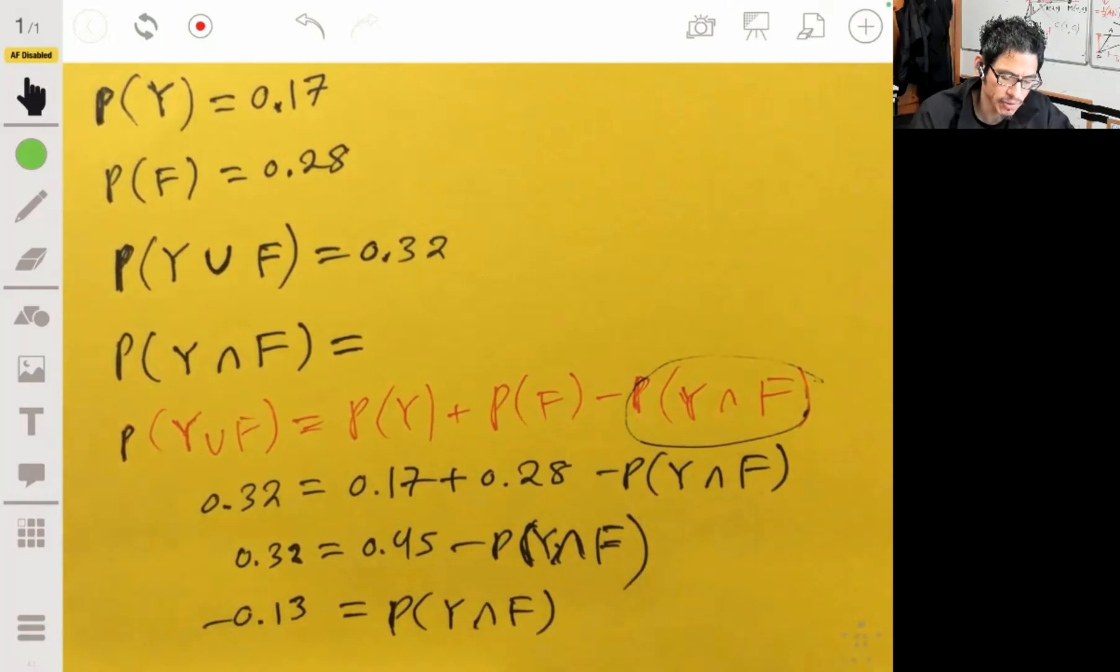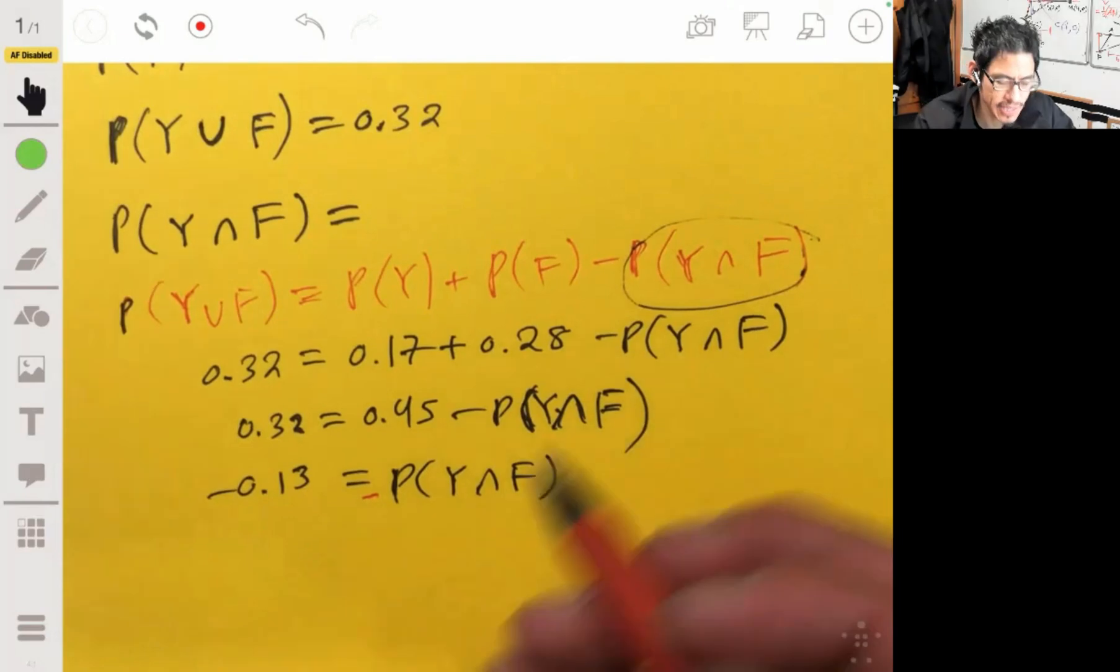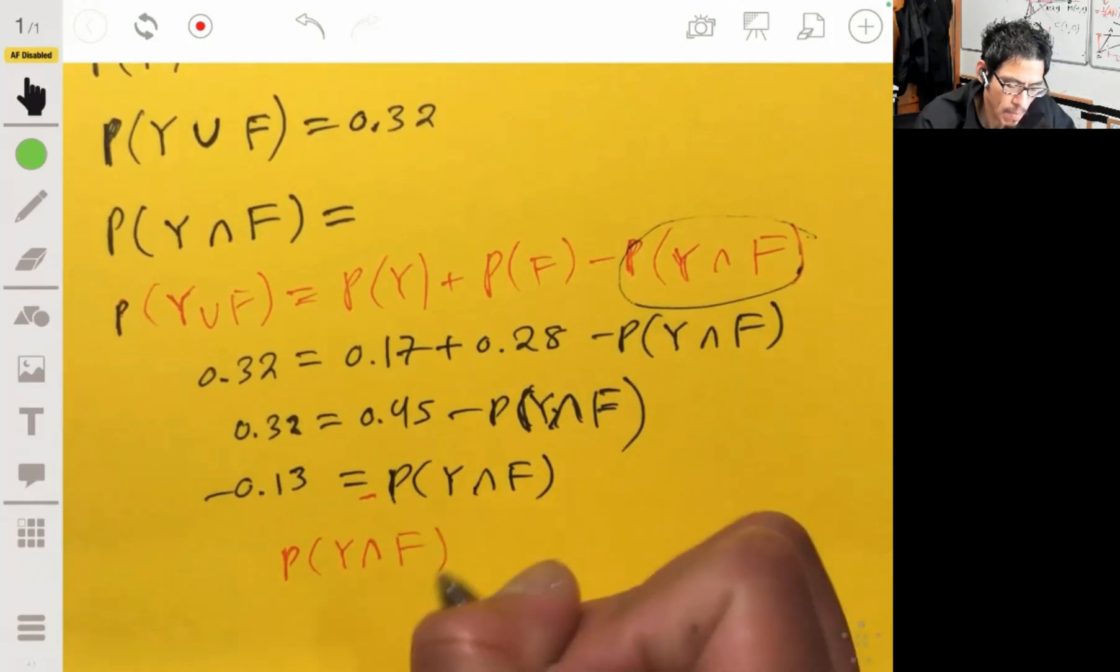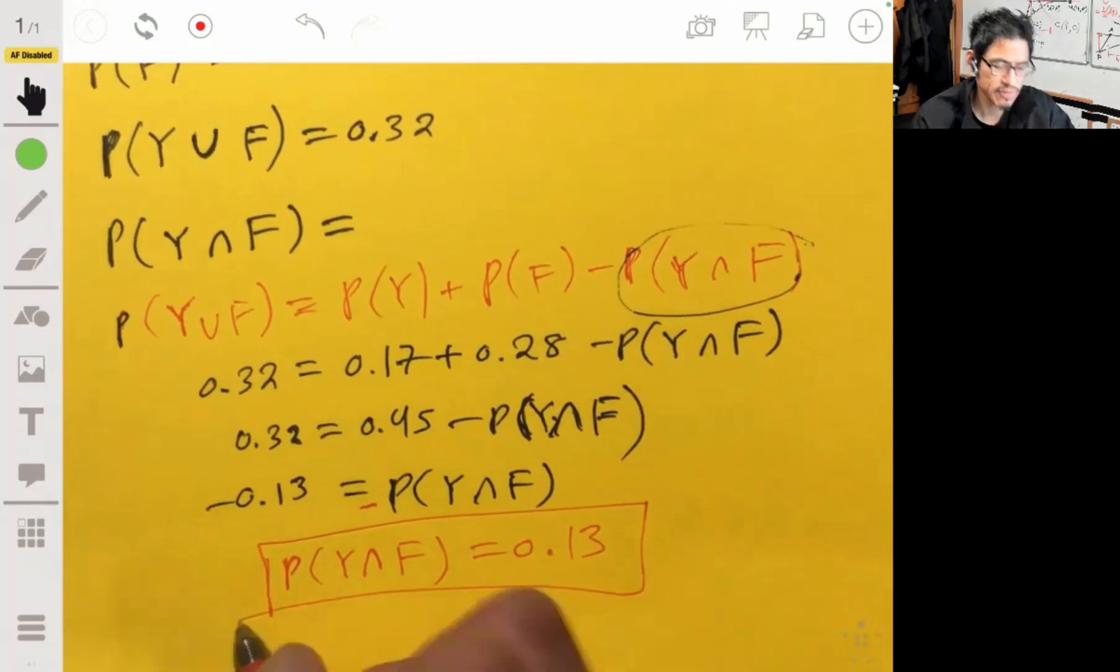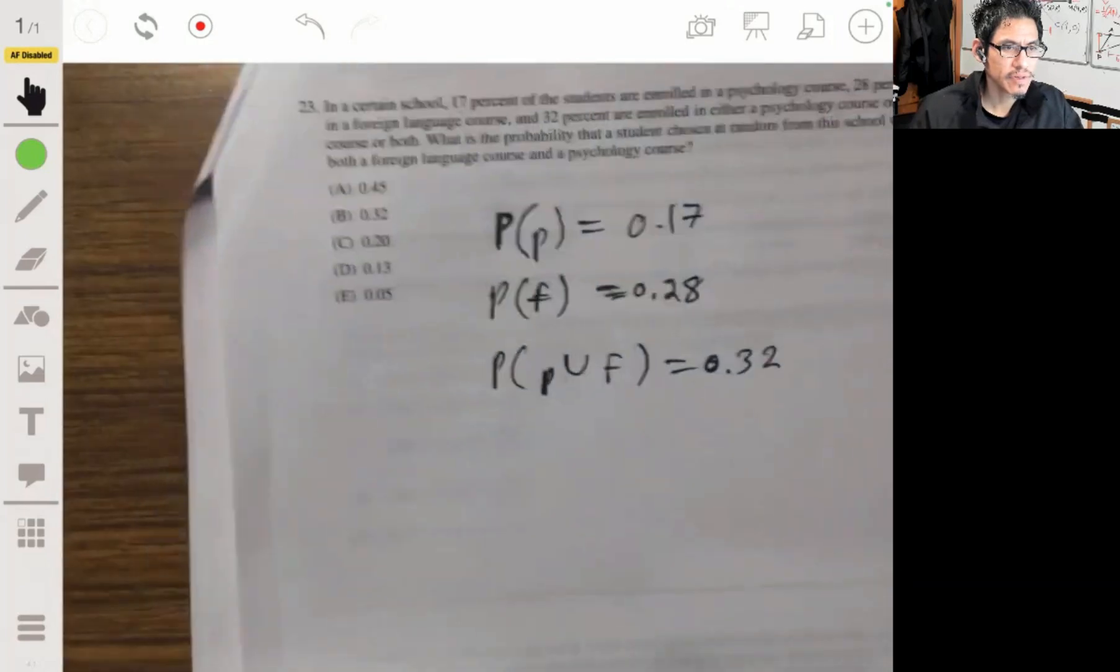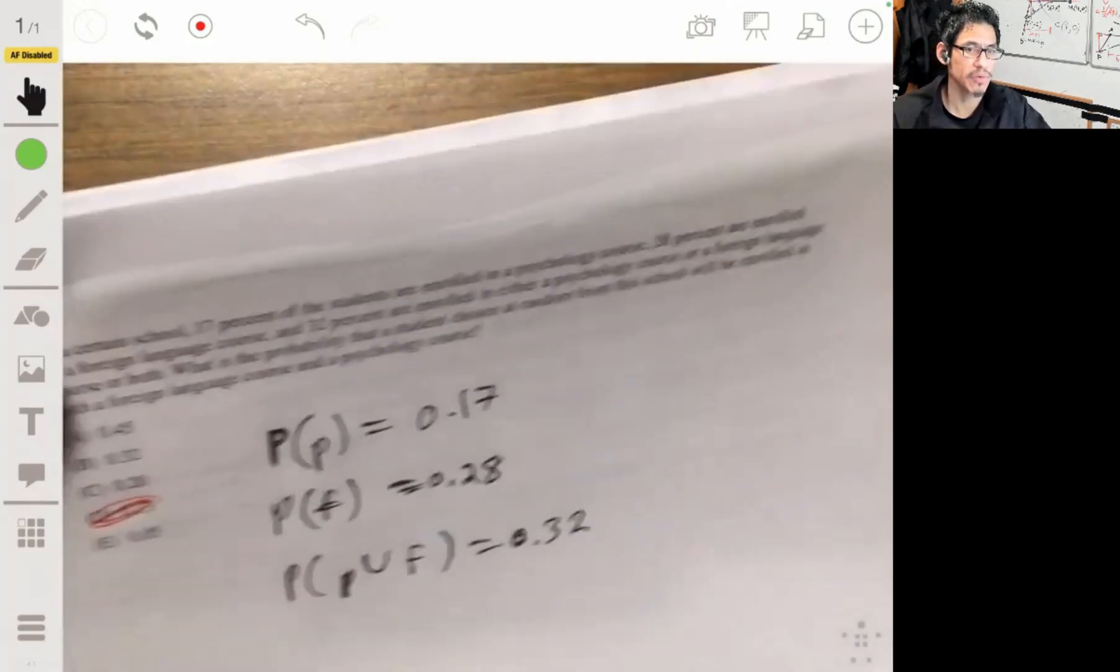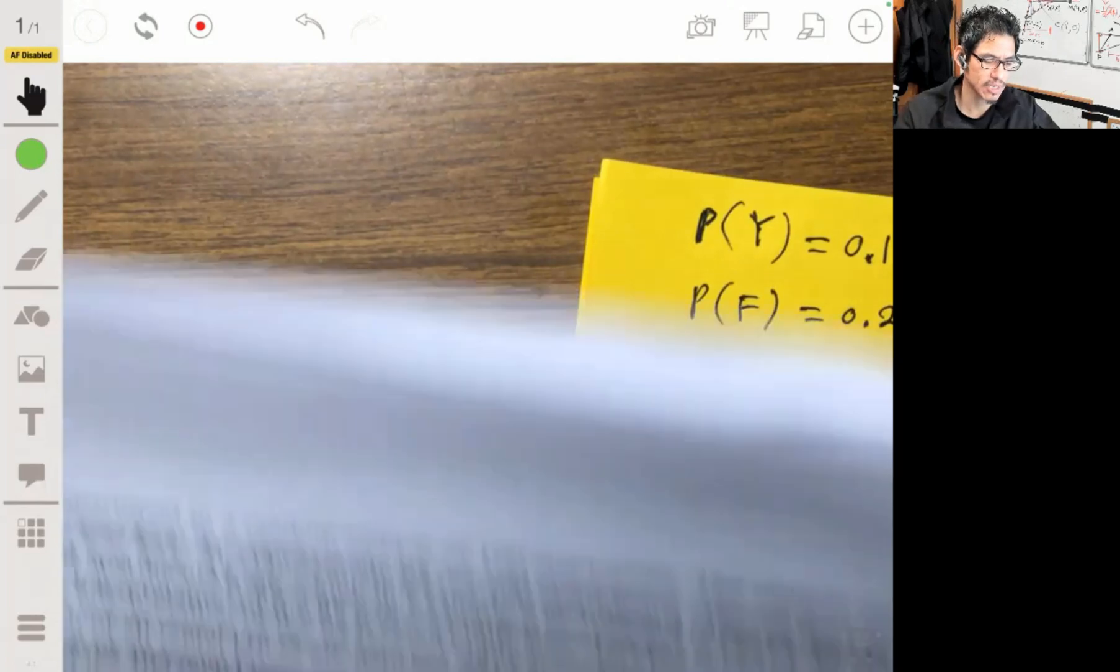Subtracting this, we get negative 0.13 equals the probability of Y and F, or equals the negative probability of Y and F. Which means, then, that the probability of Y and F is just positive 0.13. Maybe it wasn't necessary for me to write all the work, but I like to. So the answer is just going to be D. Probability ones are the toughest ones on the test, so really practice those. Practice, practice, practice.